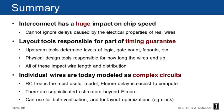In summary, interconnect has a huge impact on chip speed. You cannot ignore the delays caused by the electrical properties of real wires, and the layout tools are responsible for a big part of the timing guarantee. The upstream tools determine the levels of logic, the gate counts, the fan outs. The physical tools are responsible for how long the wires end up and where the gates go. All of these impact the wire length and the distribution. So today, to handle that, individual wires are really modeled as complex circuits. The RC tree is the most useful model. The Elmore delay is the easiest thing to compute. There are other estimators beyond the Elmore delay, but we can use these things for verification and for layout optimizations like optimizing clocks.